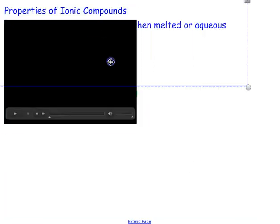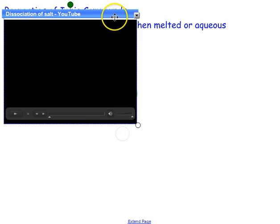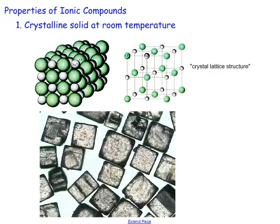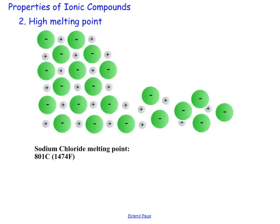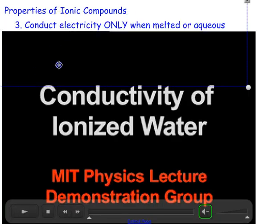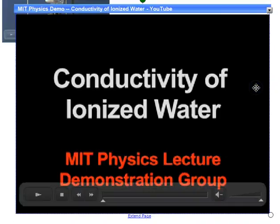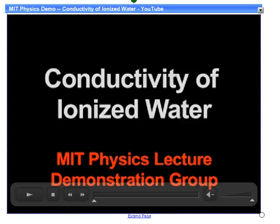So there you have properties of ionic compounds. Just to quickly review, we saw that ionic compounds have a crystal lattice structure, and they are solid at room temperature. They have a high melting point, and that ionic compounds conduct electricity only when melted or when they are aqueous. This concludes our video lecture on ionic bonding. This was Chapter 7, Section 2.